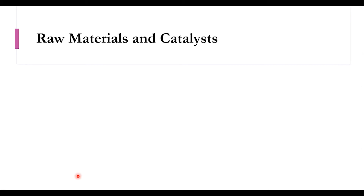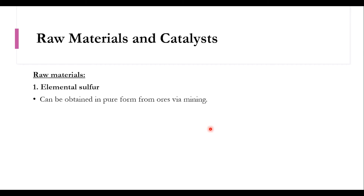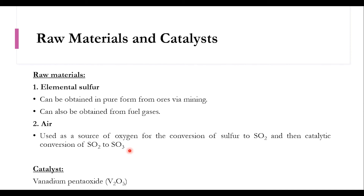The raw materials used for sulfuric acid production are: number one, sulfur, which can be obtained in pure form from ores by mining or from fuel gases; and number two, air — purified, dried air — used as a source of oxygen for the conversion of sulfur to SO2, then catalytic conversion of SO2 to SO3, and finally sulfuric acid or oleum is formed. The catalyst used is vanadium pentoxide (V2O5).